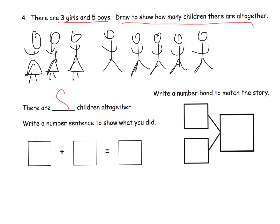So we've got eight altogether, eight children altogether. Now, what is a number sentence that we can use to show what we did? Well, probably the most common would be, we have three girls and five boys. So we are likely to see students come up with this, three plus five equals eight.